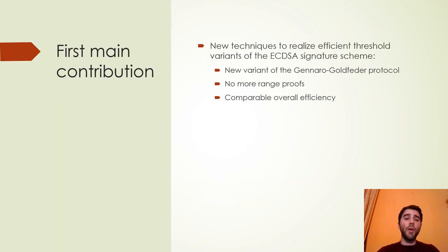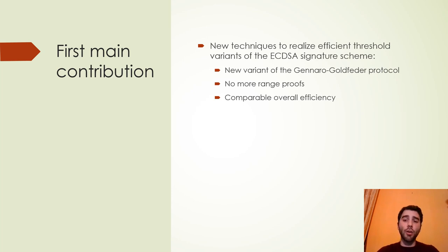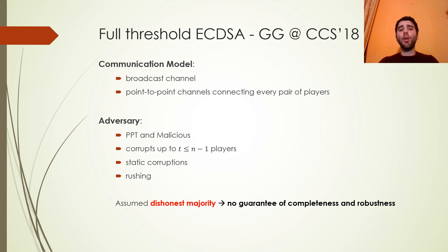Our first main contribution is the introduction of new techniques that permit us to realize efficient threshold variants of the ECDSA signature scheme. This can be seen as a new variant of the Gennaro-Goldfeder protocol. Our scheme removes the range proofs that come from that protocol and is comparable in terms of efficiency with the other solutions. Our protocol uses the same communication model and the same type of adversary as GG18.